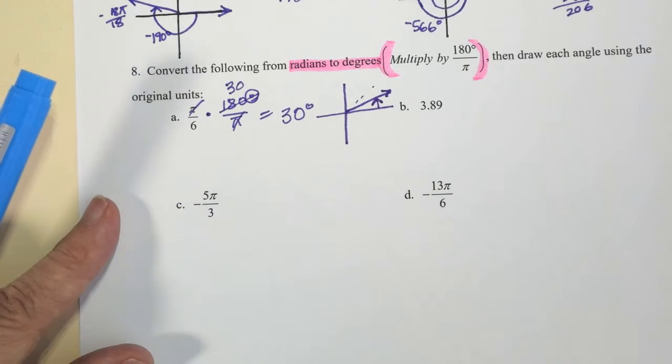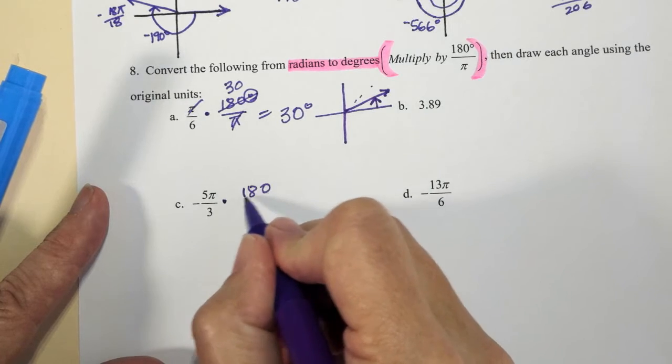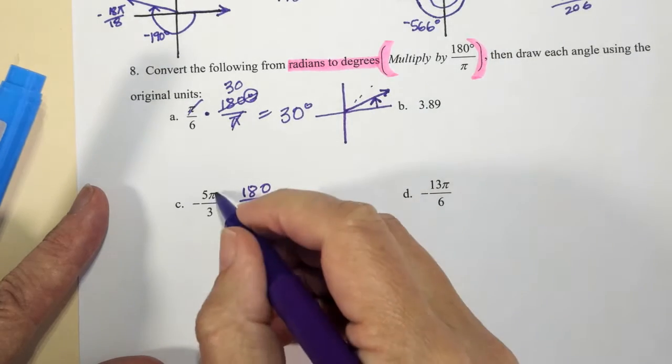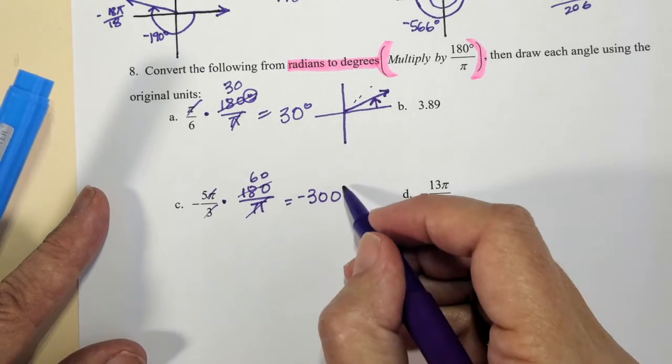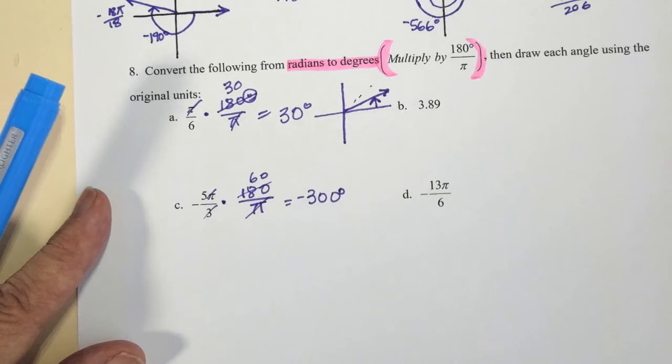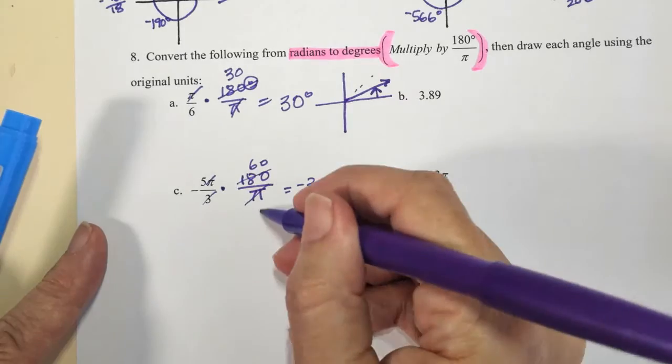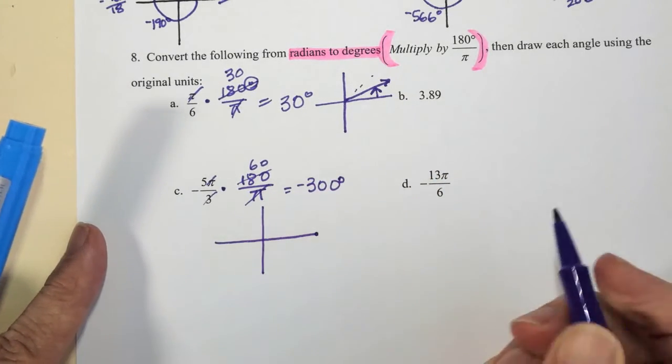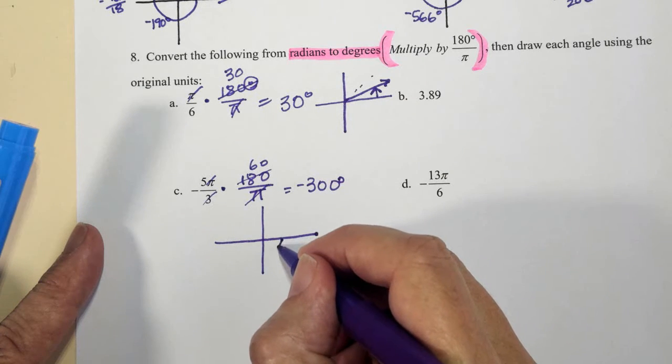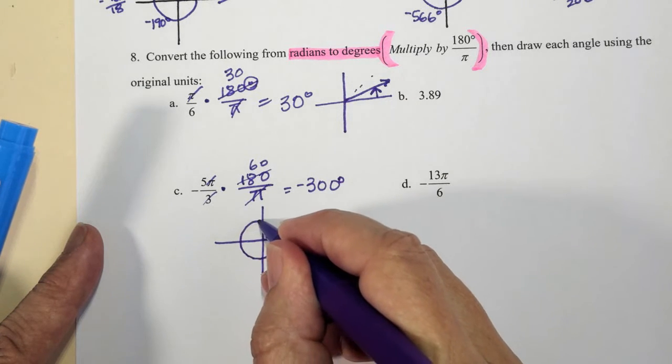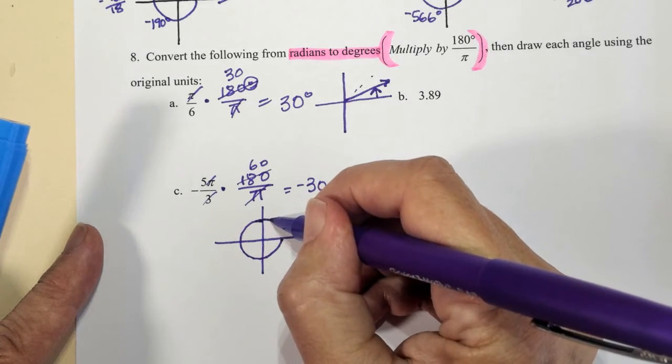Now this one is negative, but still the math is the same. And I keep my degrees symbol. Notice up here all of these were unitless. 300 degrees and negative, I'm going in a clockwise direction. This brings me to 270, negative 270, and then 30 degrees more. So 0, negative 90 degrees, negative 180, negative 270.